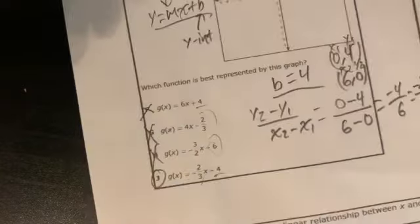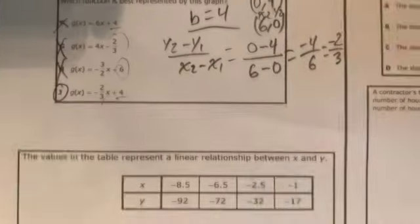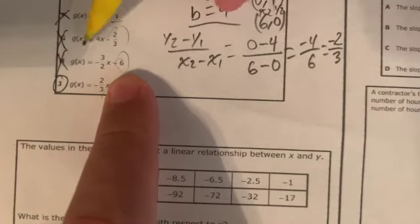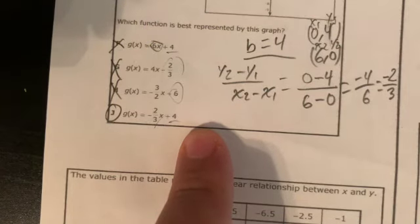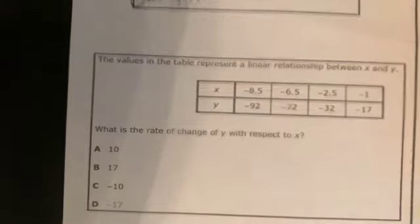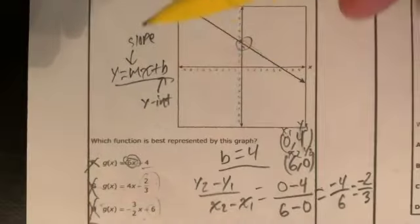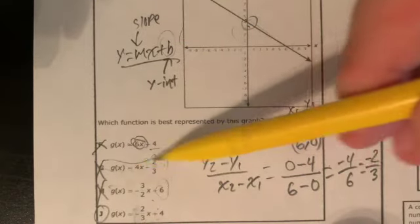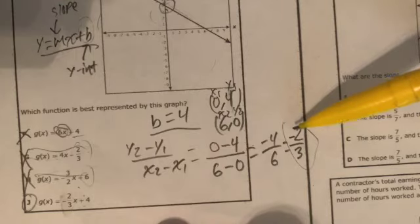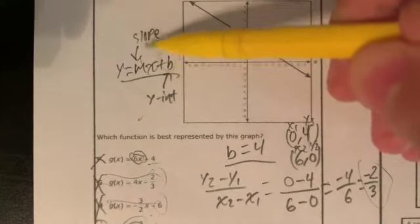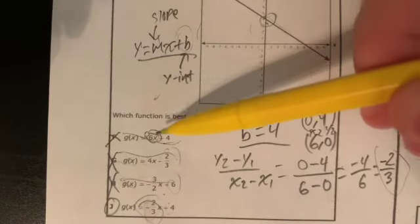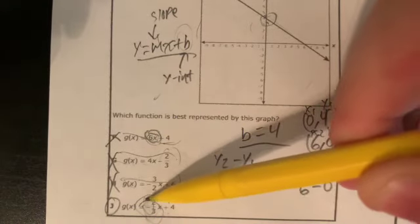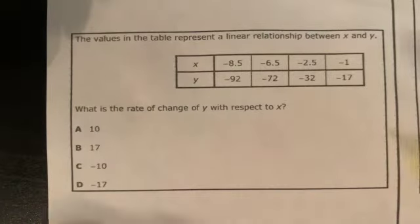Quick summary of question one: b was our y-intercept, which is four, so we crossed out G and H. We found the slope is negative two over three. We could have crossed out F from the beginning because F says the slope is six — a positive slope — but this is clearly a negative slope. Negative two-thirds is negative, so the answer is J.